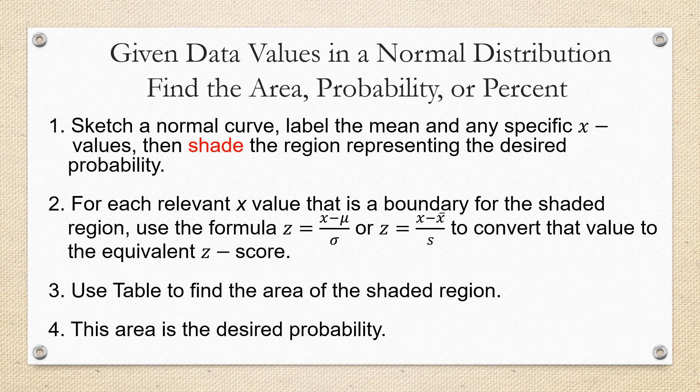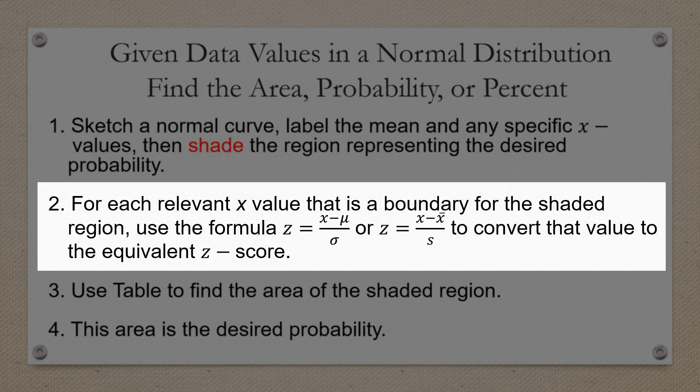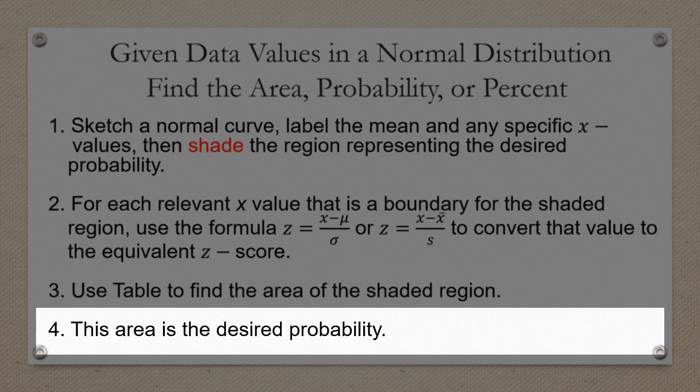So to summarize the steps that we used in this problem, if we're given data values in a normal distribution and we want to find either the area, probability, or percent, we're first going to sketch a normal curve, label the mean and any specific x values, then shade the region representing the desired area or probability. For each of the relevant x values, that's a boundary for the shaded region, we're going to use the formula for the z-score. Then we're going to use a table to find the area of the shaded region, and that area gives you your desired probability or percent.